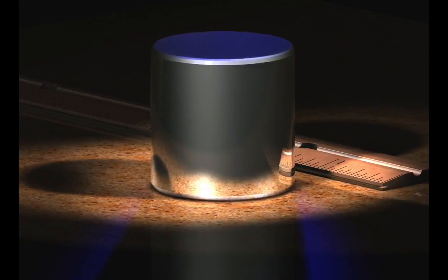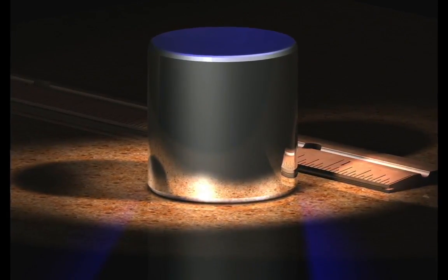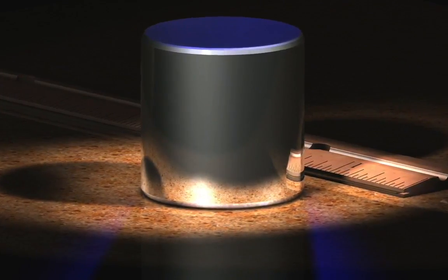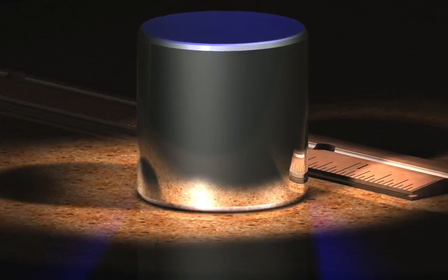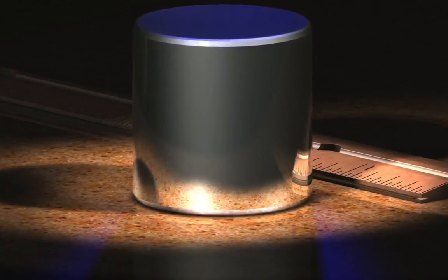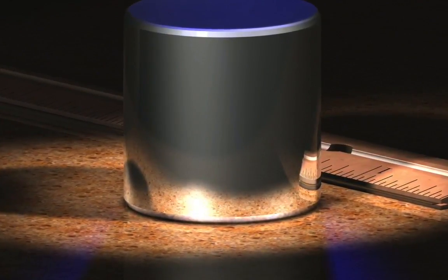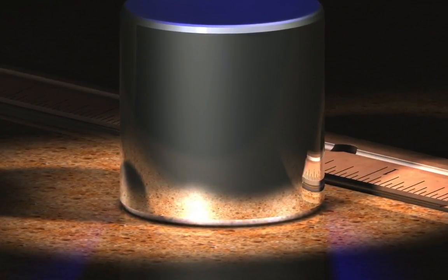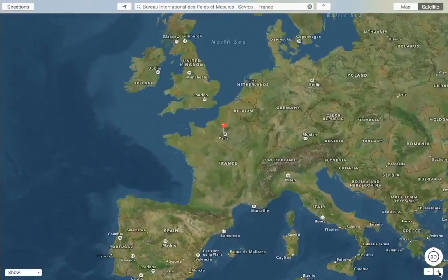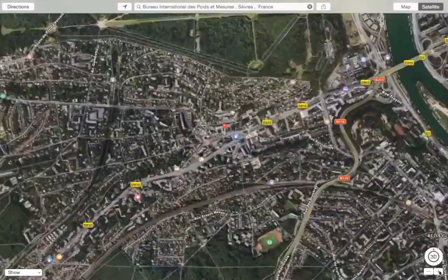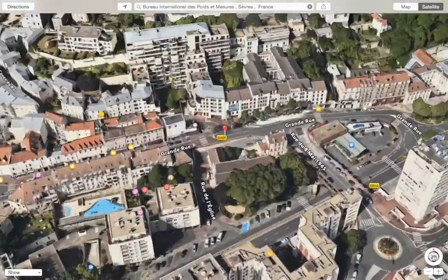The cylinder you can see here is made up of platinum iridium alloy and it is the only prototype of one kilogram with reference to which all the kilograms in the world are calibrated. It is carefully preserved in the International Bureau of Weights and Measurement situated at Severus near Paris, France.